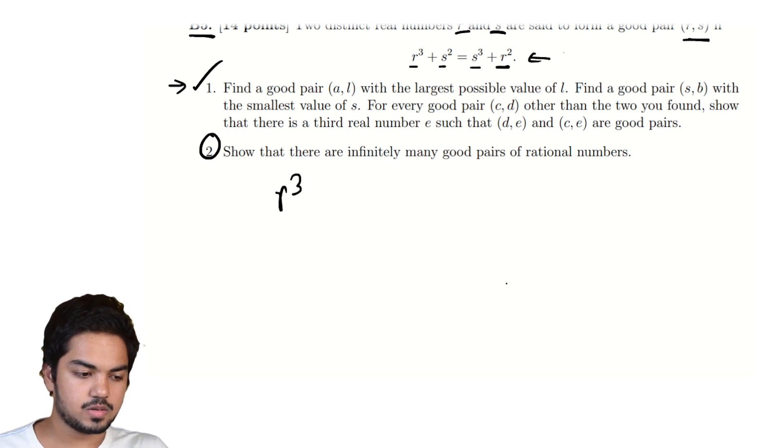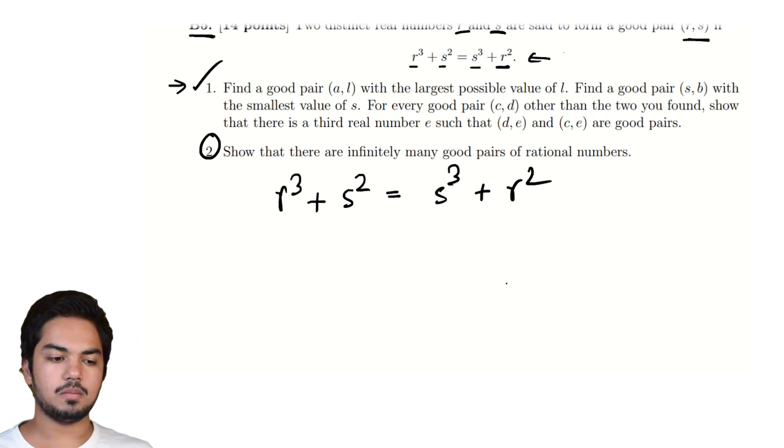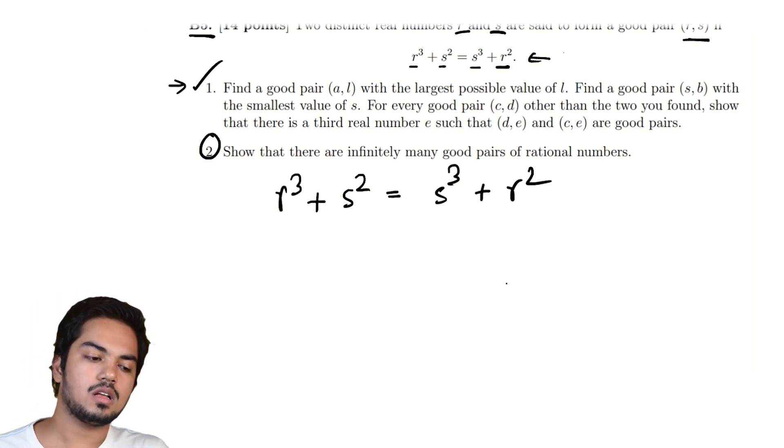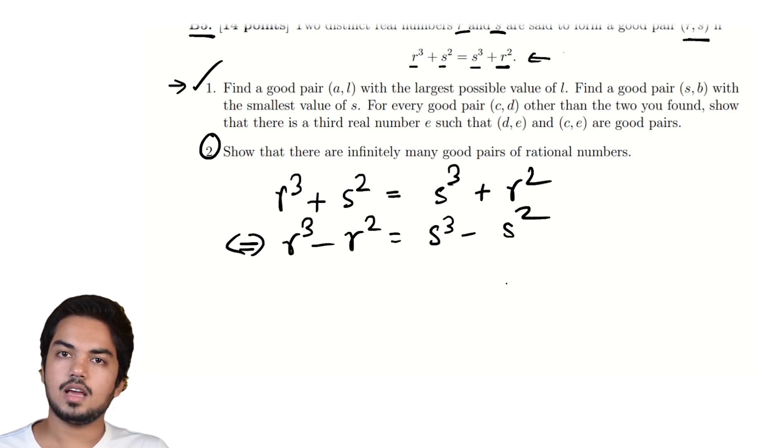Instead of working with this slightly obtuse form which is r³ + s² = s³ + r², we'll make it more homogenous if you will. And we'll make this r³ - r² = s³ - s².